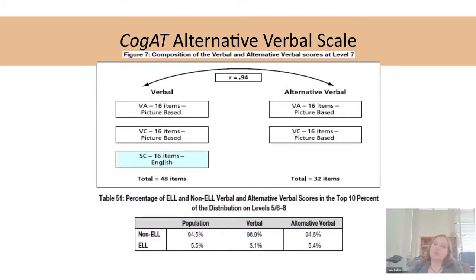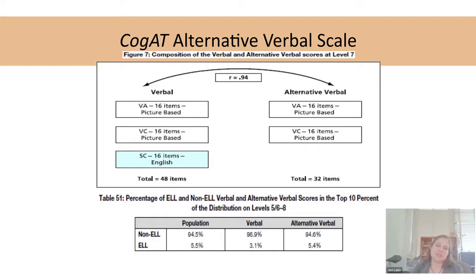One of our options is the alt-verbal. For K-2, if students are not a Spanish speaker, you can just eliminate the sentence completion test and they will be able to take the full COGAT. The directions have been translated into multiple different languages, and we're about to roll out even more languages with the audio option for computer-based administration.